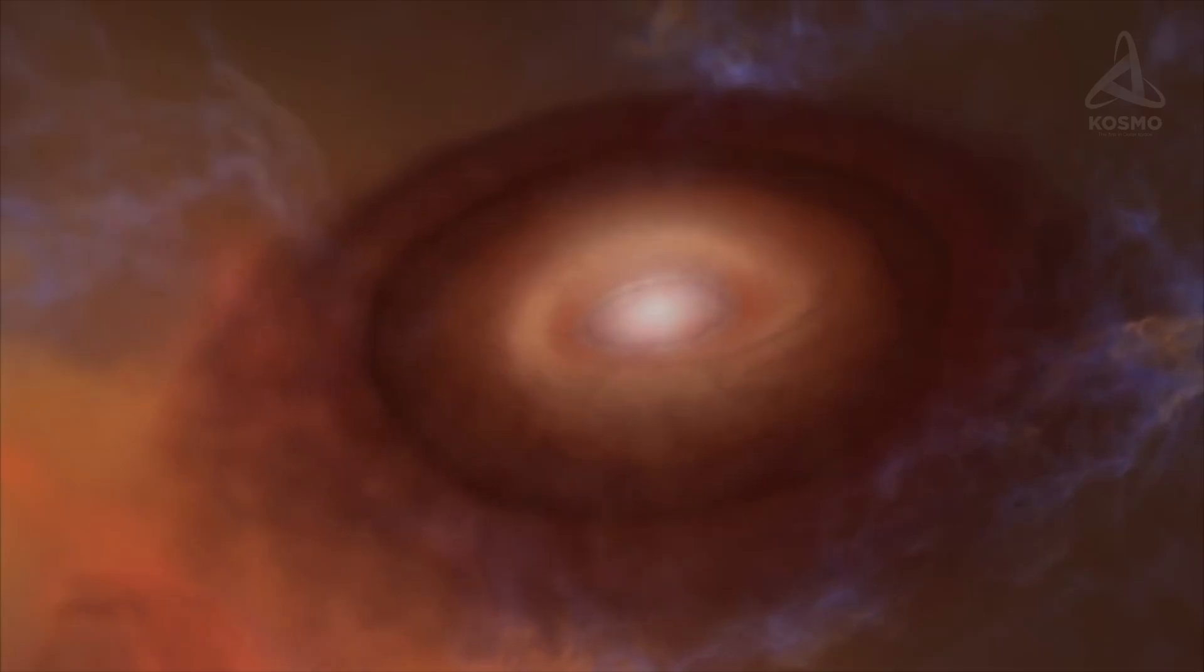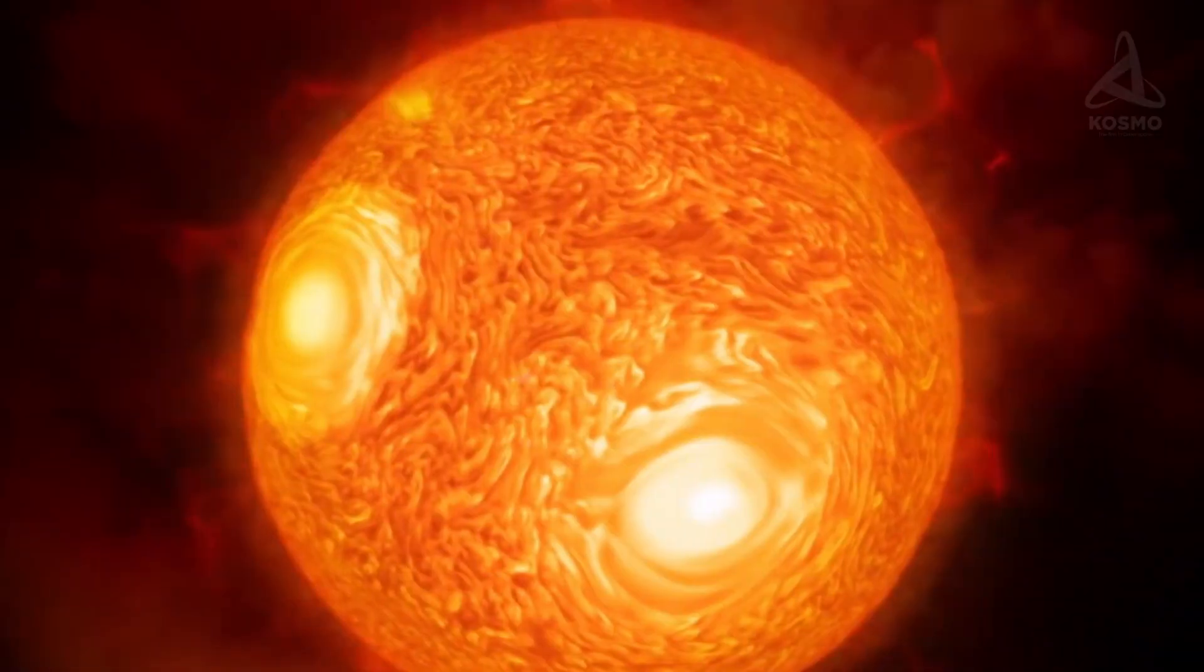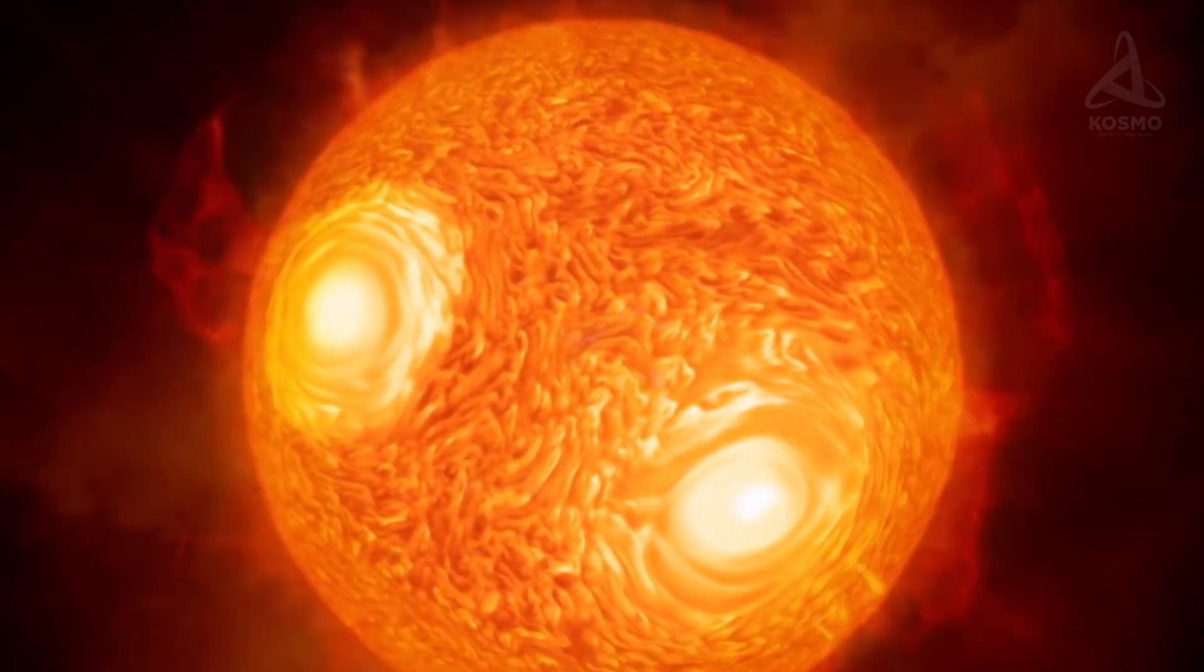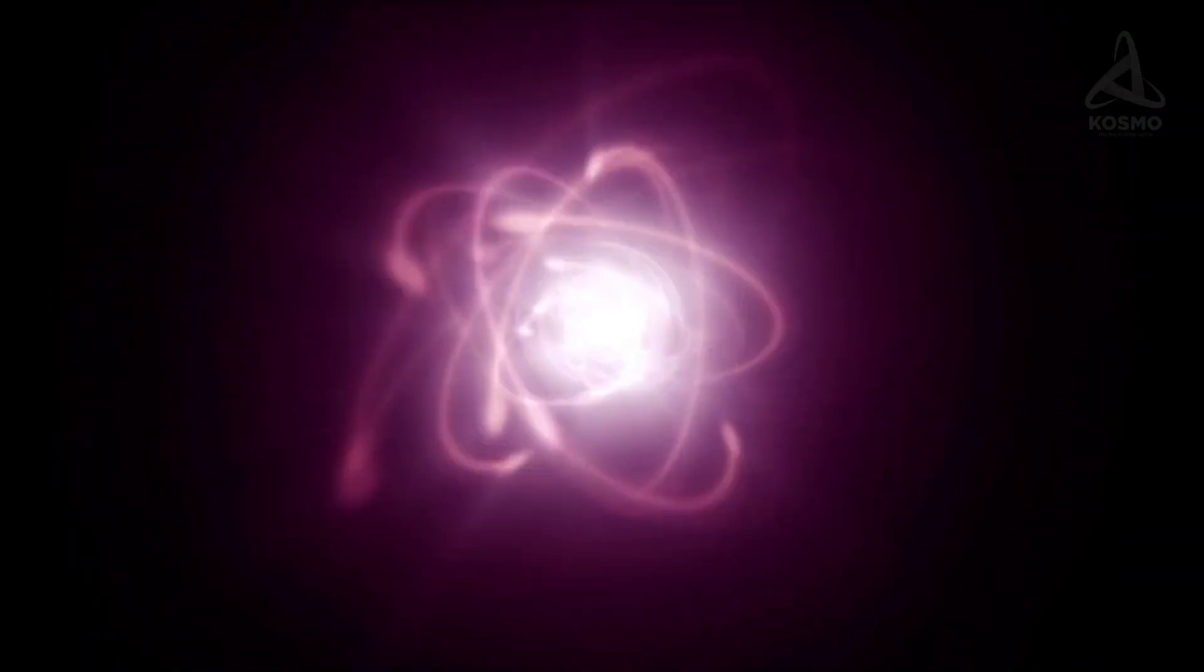The enormous nebulae disintegrate into a great number of protostellar disks, and each of them has a chance of becoming a fully-fledged star at some point. Its destiny depends on how much matter the young star will manage to capture. If the mass of a protostar is over 8% of that of the Sun, thermonuclear reactions are bound to start in its interior.